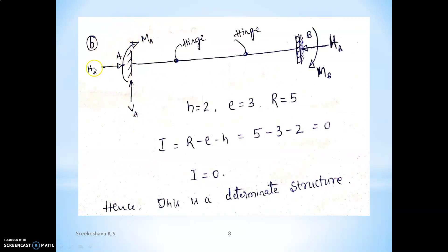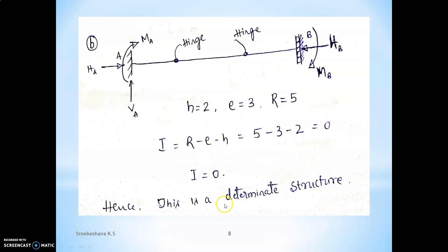Second hinge example: fixed support develops three reactions (Va, Ha, Ma), and there are two internal hinges given. The other support allows vertical reaction and moment, giving two reactions there — total five external support reactions. Number of hinges = 2, equilibrium equations available = 3. Using I = r - e - h: 5 - 3 - 2 = 0. This structure is also statically determinate.